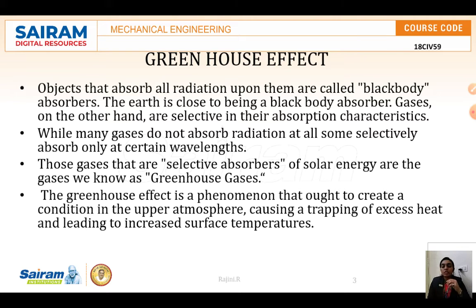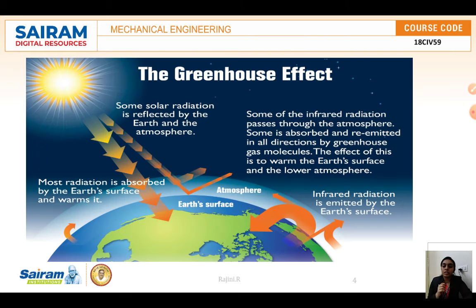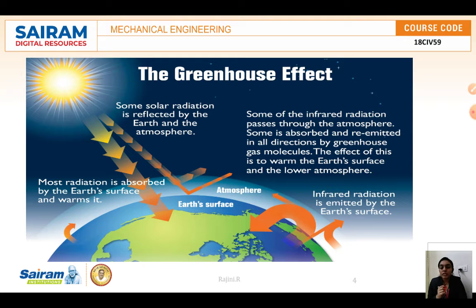The greenhouse effect is a phenomenon that creates conditions in the upper atmosphere, trapping excess heat and leading to increased surface temperatures. As seen in this figure, infrared radiation is emitted by the earth's surface. Some of that infrared radiation passes through the atmosphere, while some is absorbed and re-emitted in all directions by greenhouse gas molecules. This effect warms the earth's surface and the lower atmosphere. Most solar radiation is absorbed by the earth's surface, warming it, while some is reflected by the earth and the atmosphere.